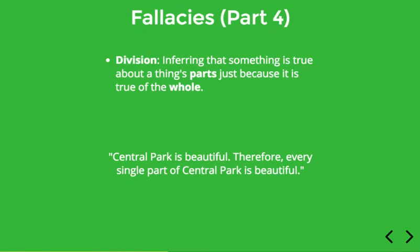Next we'll consider two related fallacies known as composition and division. Both of these fallacies have to do with ignoring the differences between a whole and its parts. Let's start with division. With division, a person infers that something is true about a thing's parts just because it's true about the thing as a whole.